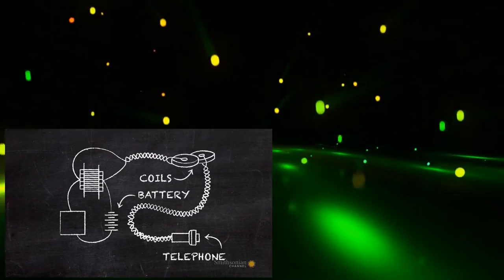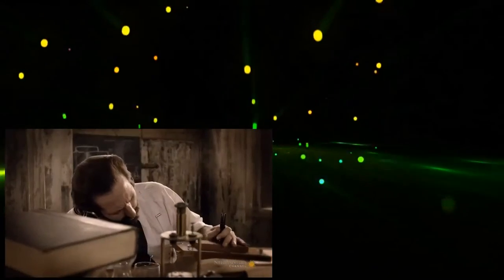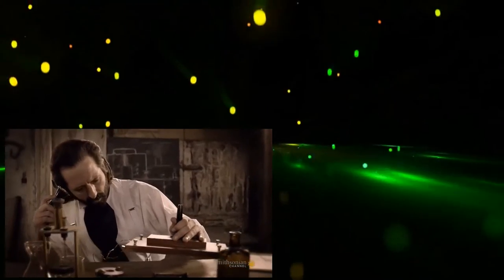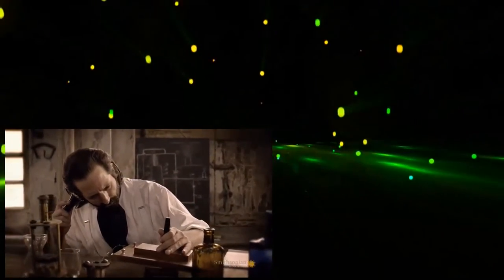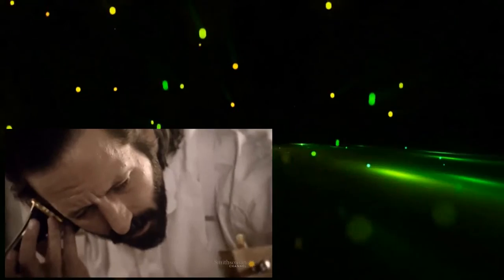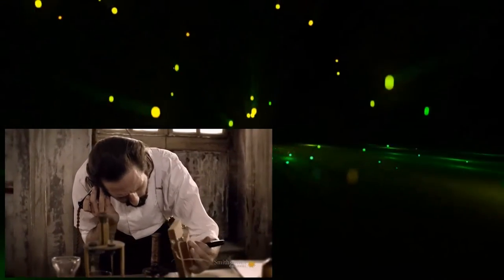One coil creates an electromagnetic field, and the other coil measures the field. But Bell notices that when the device is put close to metal, the metal interacts with the electromagnetic field, and it causes something else to happen. He found that if metal passed through, you would hear a noise.